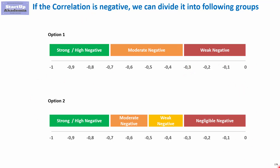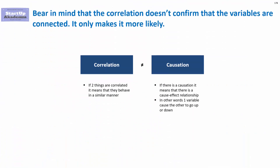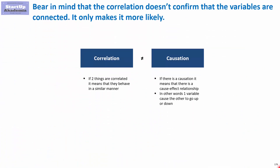The last thing to know about correlation before moving on to calculation is that correlation is not causation. Causation means there is a cause-and-effect relationship between two variables — one causes the other to go up or down. Correlation only means that they behave in a similar manner, but actually there might not be any real relation between them.